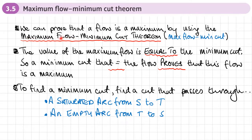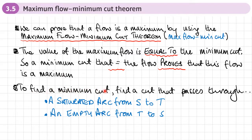The maximum flow minimum cut theorem, or max flow min cut for short, states that the value of the maximum flow is equal to the minimum cut. So if we can find a minimum cut that equals the flow, this proves that the flow is a maximum flow.